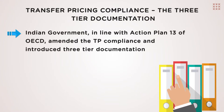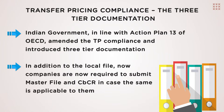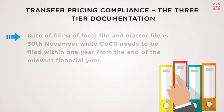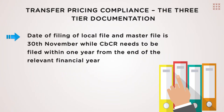The Indian government, in line with Action Plan 13 of the OECD, amended the TP compliance and introduced a three-tier documentation process. In addition to the local file, companies are now required to submit a master file and CBCR, otherwise known as the country-by-country report, in case the same is applicable to them. The date of filing of the local file and master file is the 30th of November, while the CBCR needs to be filed within one year from the end of the relevant financial year.